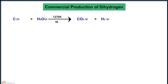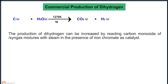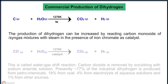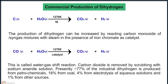The reaction is as shown. The production of dihydrogen can be increased by reacting carbon monoxide of syngas mixtures with steam in the presence of iron chromate as catalyst. This is called the water gas shift reaction. Carbon dioxide is removed by scrubbing with sodium arsenide solution.